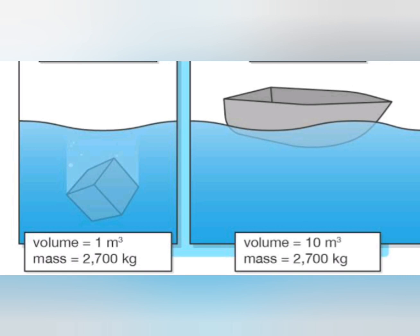An iron nail sinks in water while a ship floats. If we place an iron nail on the surface of water, it sinks. This is because the density of iron is greater than that of water. The weight of the nail is more than the buoyant force of the water on it, so the nail sinks in the water.